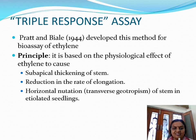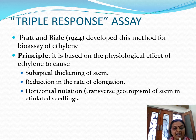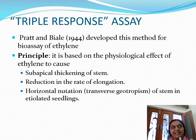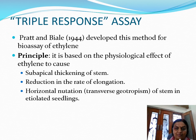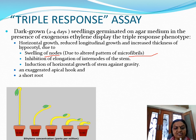This results in sub-apical thickening of the stem and a reduction in the rate of elongation. Apart from that, there is horizontal growth — the seedling neither grows in the direction of gravity nor against it, so it exhibits transverse geotropism. This triple response effect is observed and made use of for this particular assay.